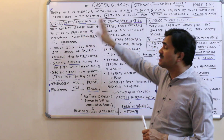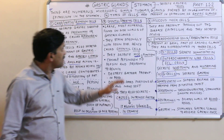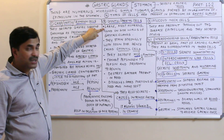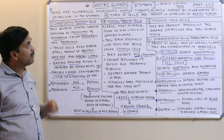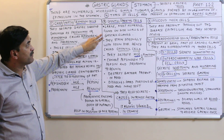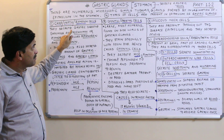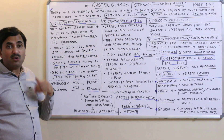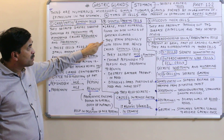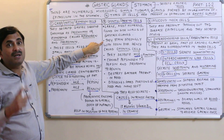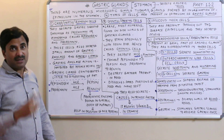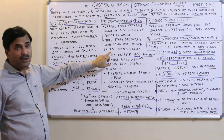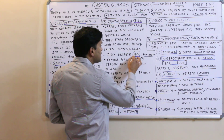The second important cell type is the oxyntic cells, also called parietal cells. They are large and are the most numerous type of cells found in the epithelium of the gastric glands, present on the side walls of the gastric glands. Chief cells, by contrast, are found at the basal region. Oxyntic cells are called so because they stain strongly with an acidic dye known as eosin.